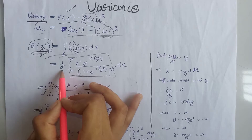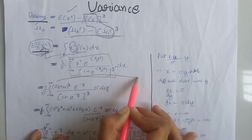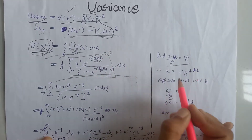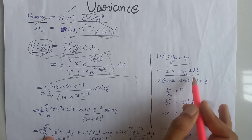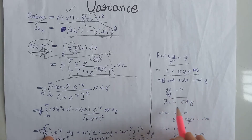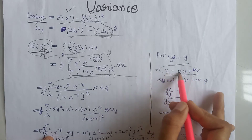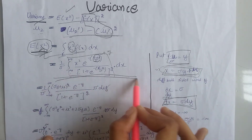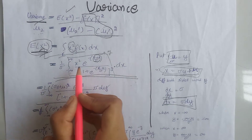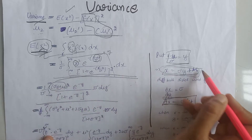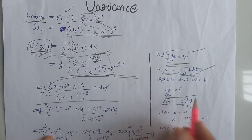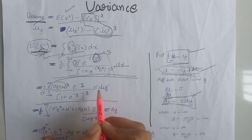Next, we use the same substitution: this term equals y, from which the value of x equals sigma·y plus mu. Differentiating both sides with respect to y gives dx equals sigma multiplied by dy. Using these three equations, at the place of x we write sigma·y plus mu, at the place of the exponential term we write y, and at the place of dx we write sigma·dy. Sigma cancels out with sigma.